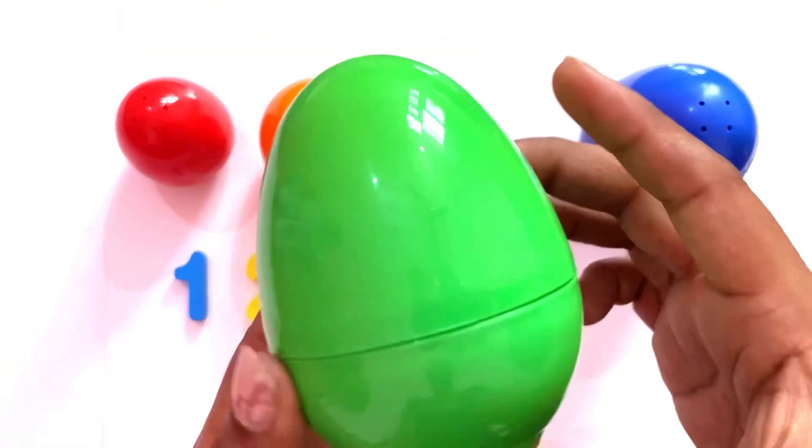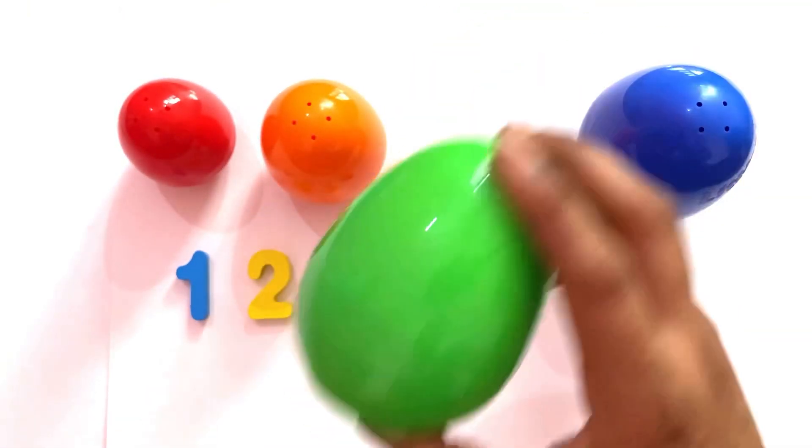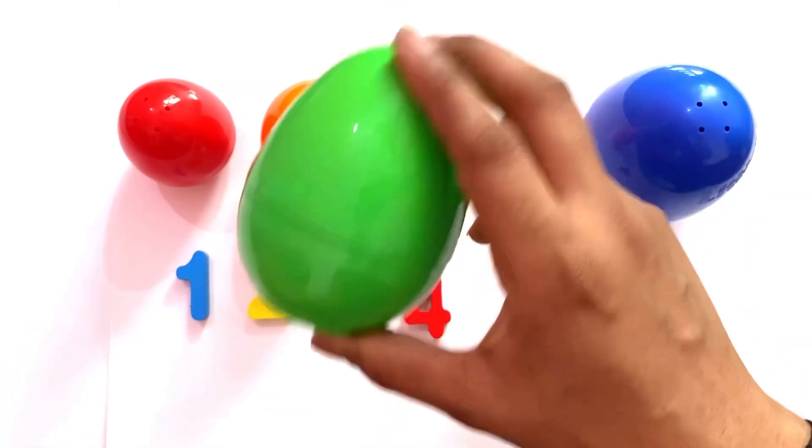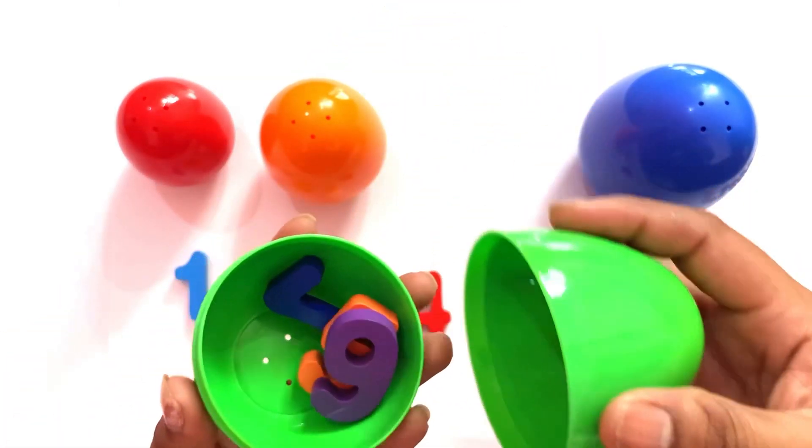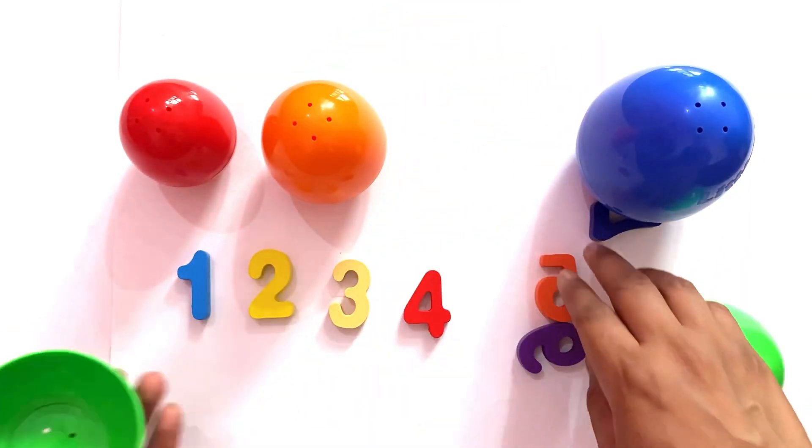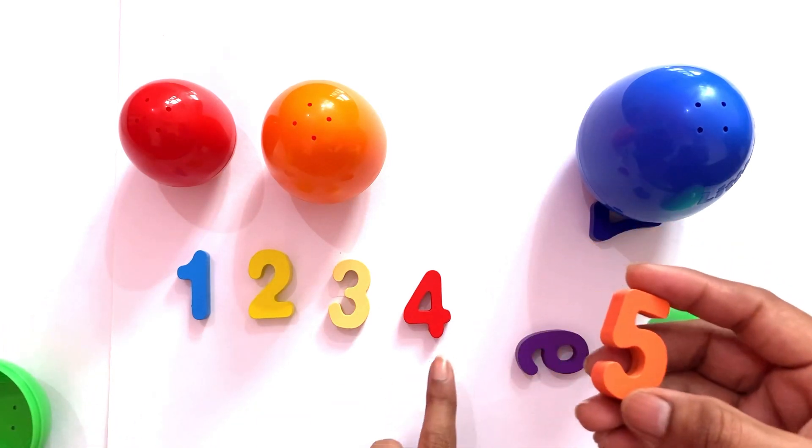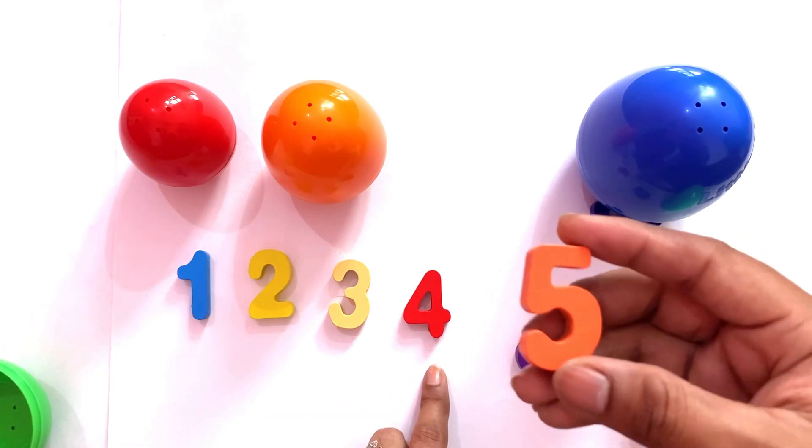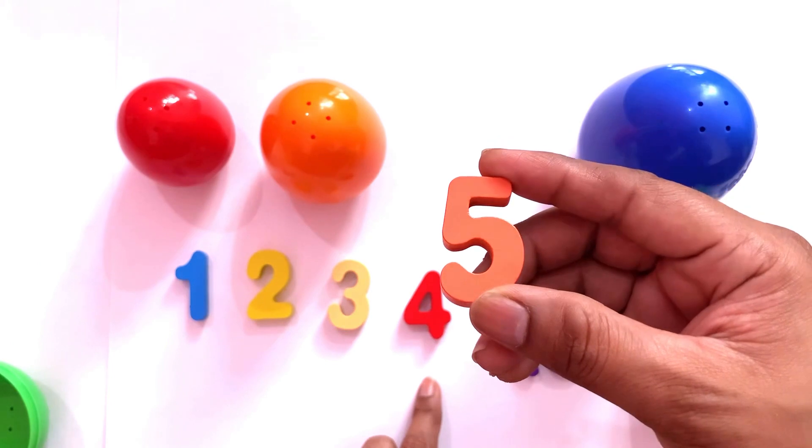Now, green color egg. After four, next number will come. Five, five.